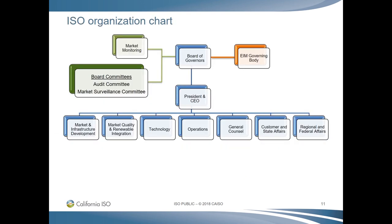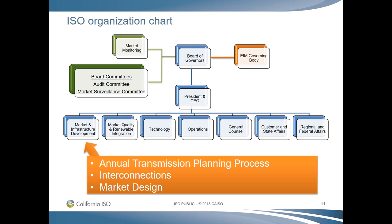Here is our organizational chart. You can see where our Board of Governors resides, as well as how our Department of Market Monitoring reports directly to them. There are also a couple of board committees: the audit committee has oversight of the ISO budget and financial operations, while the market surveillance committee provides the board with independent counsel regarding market efficiencies and design. The Western EIM governing body exercises delegated authority from the board over EIM rules. The ISO is led by a president and CEO with Finance and Human Resources reporting directly to that office.